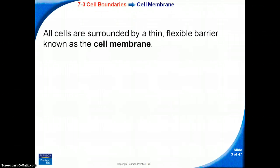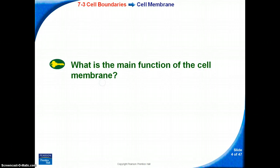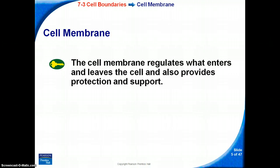All cells are surrounded by a thin, flexible barrier known as the cell membrane. Many cells also produce a strong supporting layer around the membrane known as the cell wall. The main function of the cell membrane is to regulate what enters and leaves the cell, and also to provide protection and support.